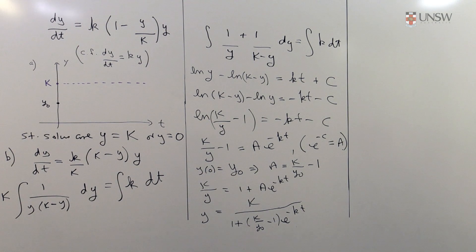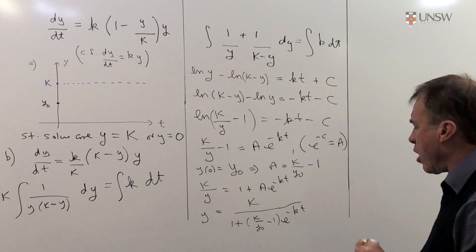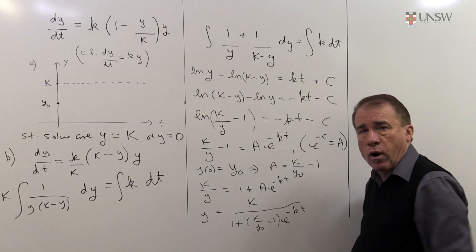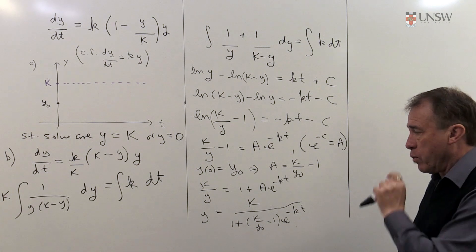And that gives me the solution to the differential equation with that particular initial condition. Could tidy it up a bit more, you could multiply through by y_0 if you wanted to, top and bottom to tidy it up a bit. Haven't got to do that, but you could do that if you wish.